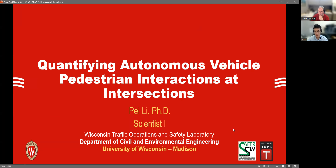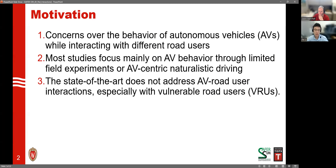Let's get started with the motivation of conducting this study. There are some concerns over the behavior of autonomous vehicles, also known as AVs, while interacting with different road users. We would want to know how these vehicles interact with other human-driven vehicles, pedestrians, and bicyclists, to make sure that they are safe and they actually behave very well while interacting with other road users.